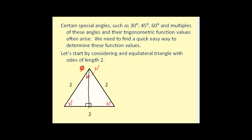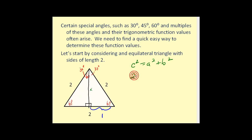So what we want to do now is determine the length of each side of one of these 30-60-90 right triangles. We know this side is equal to two units, and since this perpendicular bisector bisects this side, we know that the length of this side here would be one. So we have one unit here, two units here, and the question is what would this length be? Well, we can use the Pythagorean theorem: c squared equals a squared plus b squared. Since c is the hypotenuse, we have two squared equals x squared plus one squared, so four equals x squared plus one. Subtracting one on both sides and taking the principal square root, we get x equals the square root of three.